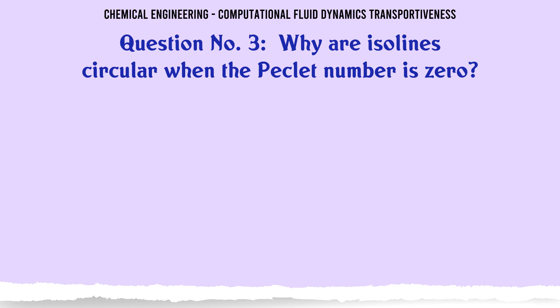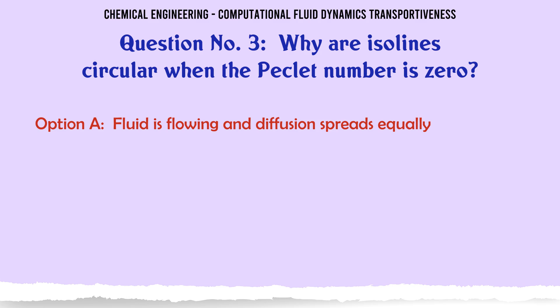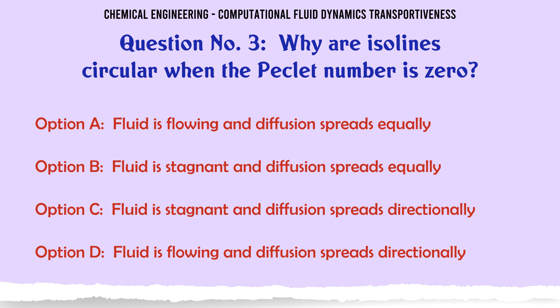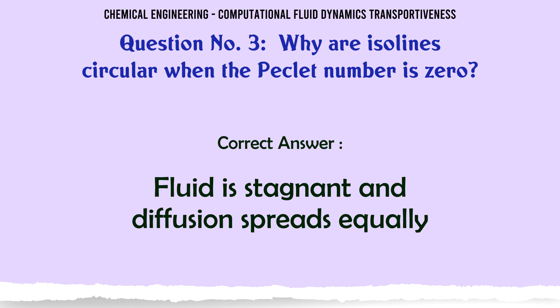Why are isolines circular when the Peclet number is zero? A. Fluid is flowing and diffusion spreads equally. B. Fluid is stagnant and diffusion spreads equally. C. Fluid is stagnant and diffusion spreads directionally. D. Fluid is flowing and diffusion spreads directionally. The correct answer is: fluid is stagnant and diffusion spreads equally.